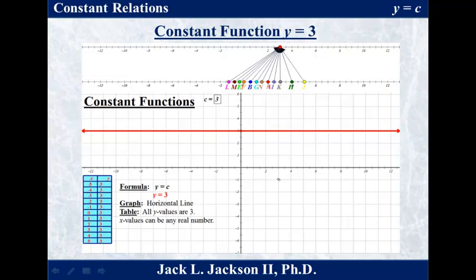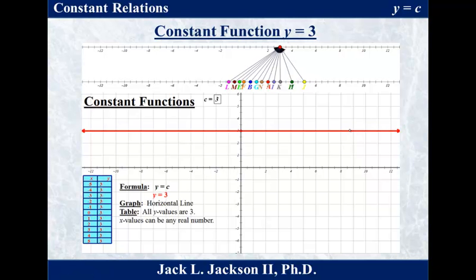Now that we're back, we can take a look at this. In the dynagraph, or an arrow diagram, we have every possibility for the input, but the output is always just that specific number 3. So all the arrows start at different places, but they all point to one single number. When we look at the table, the x's can be anything, but the y's, or outputs, are 3. The formula is y equals 3, so y is 3 regardless of what x is — x can be anything. If you graph all these points in a Cartesian plane, these ordered pairs all fall on a horizontal line.